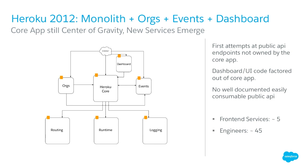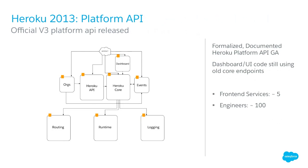A couple of years later, growing to about 45 engineers, we reached a point where we decided not to put new things in the core — let's try a service. We broke out the UI into the dashboard, and added a new org service and event service. We also separated the API. You'll notice one bidirectional arrow between services, which is kind of an anti-pattern — we'll see how that got resolved later.